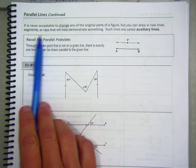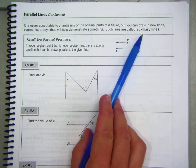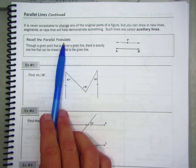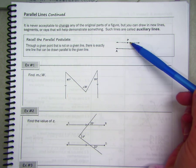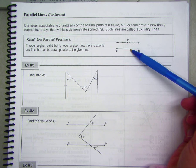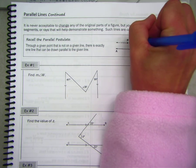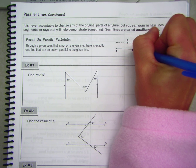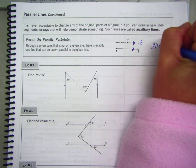Such lines are called auxiliary lines. Recall the parallel postulate from unit one: the parallel postulate says that through a given point not on a given line — in our diagram, point P is not on AB — there is exactly one line that can be drawn parallel to the given line. This line is the one and only line that can be drawn parallel to AB, so we can label it L. So L is parallel to line AB.